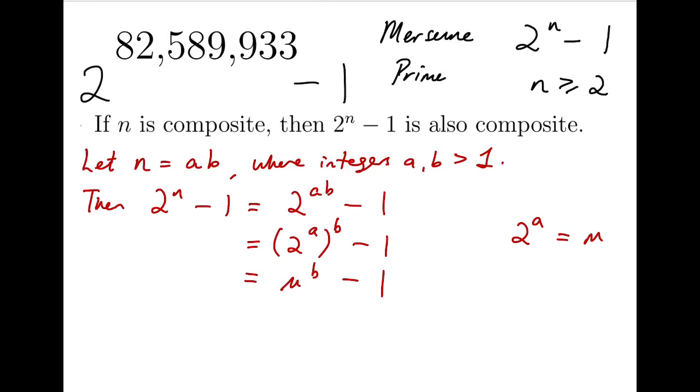And it's actually divisible by the number m minus 1, because I can factorize this number. It's actually the product of m minus 1 and this expression: m to the b minus 1 plus m to the b minus 2 all the way adding down to m and adding 1 at the end. And so this number is proved to be composite.